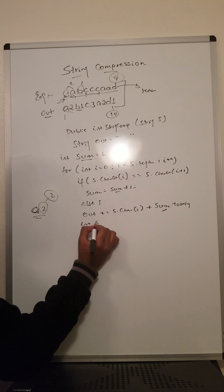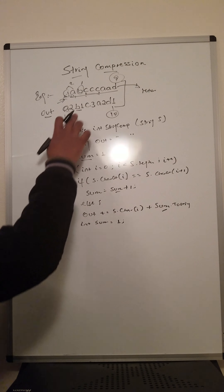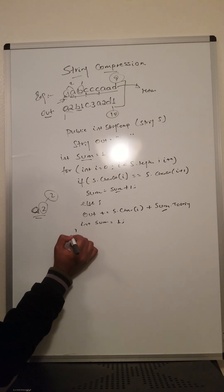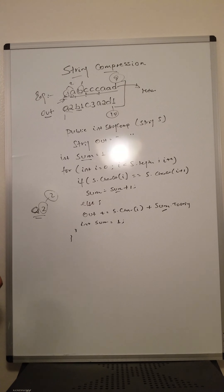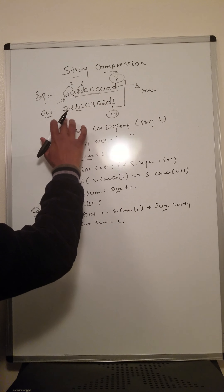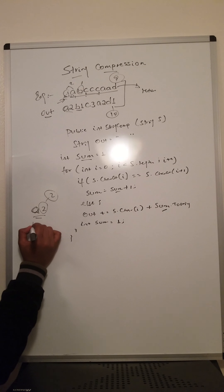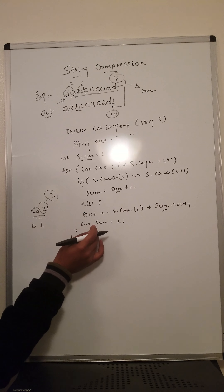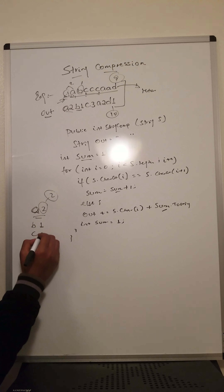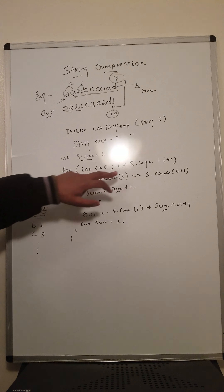We then reset our sum back to one for the next character. After a is finished, b is one — sum equals one again, reset. Then we take c which is three, and we iterate to the length of the string.